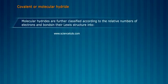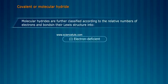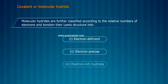Molecular hydrides are further classified according to the relative numbers of electrons and bonds in their Lewis structures into: electron deficient, electron precise, and electron rich hydrides.